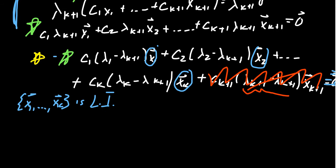So the only way that this set can combine to be zero, this would imply that each of these coefficients, CI times lambda I minus lambda K plus 1, this equals zero. The only way an independent set can combine to give you zero is if all the coefficients were zero themselves.